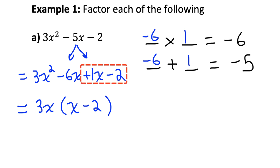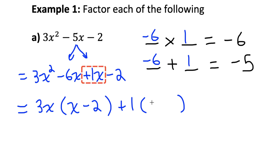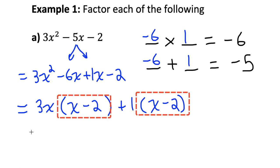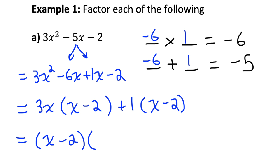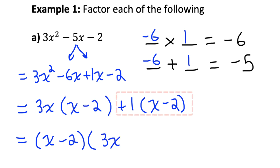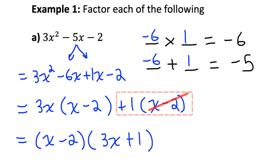For the last two terms — 1x minus 2 — there are no common factors other than 1, so I factor out 1. Dividing both terms by 1, they remain x and negative 2. Notice I now have a common binomial: both terms contain x minus 2. I remove x minus 2 as the first factor. Dividing each term by x minus 2: 3x·(x−2)÷(x−2) = 3x, and 1·(x−2)÷(x−2) = 1. So the factored form is (x − 2)(3x + 1).